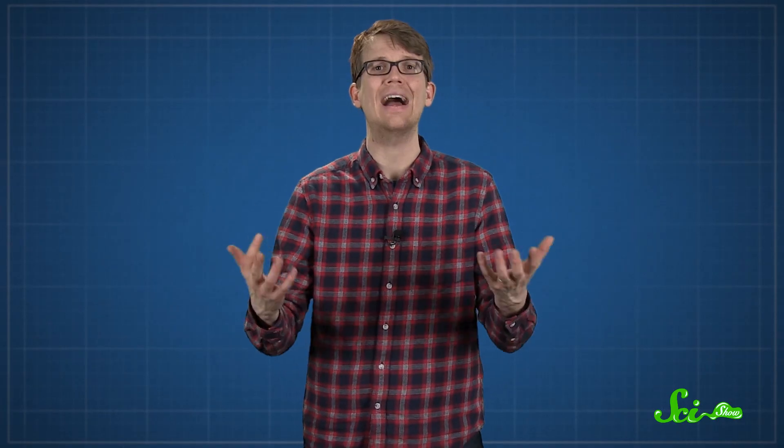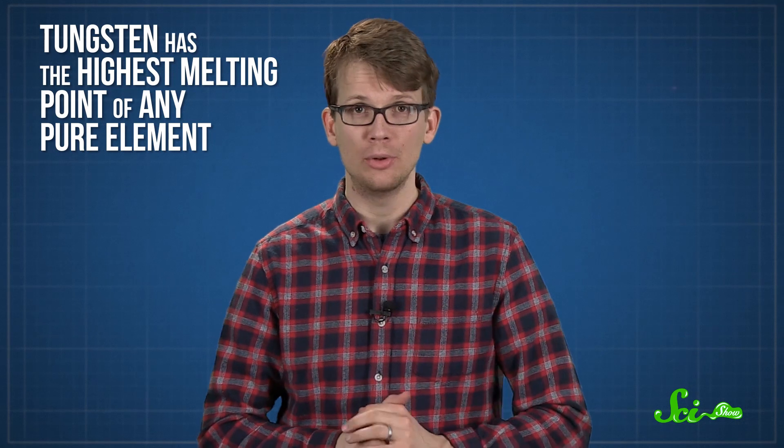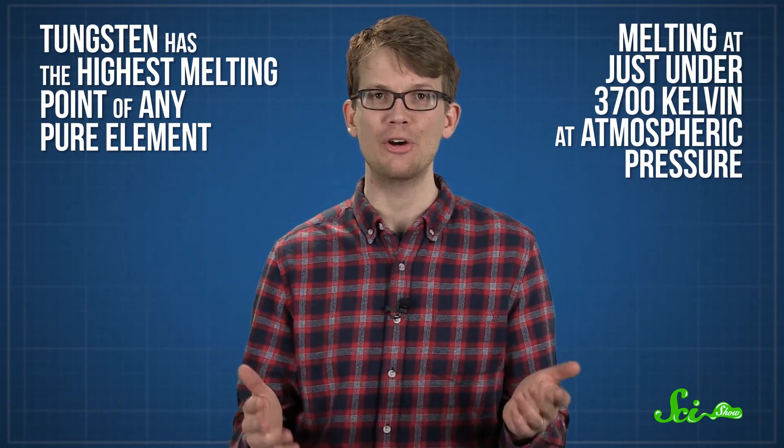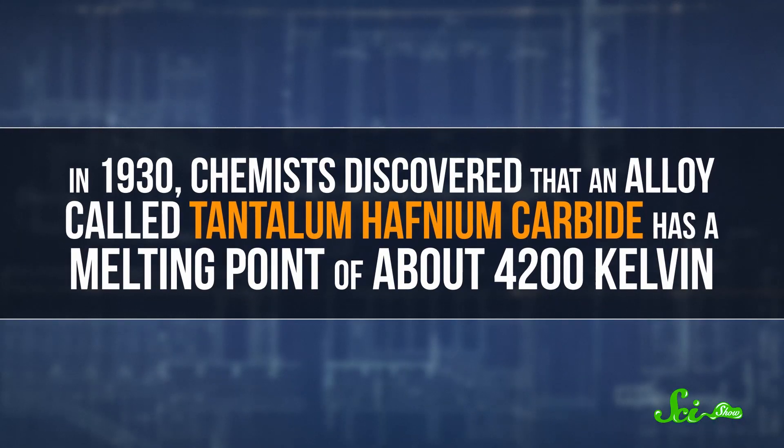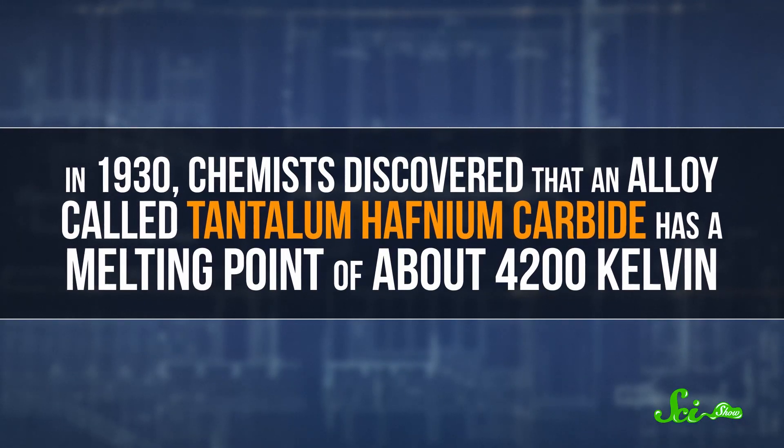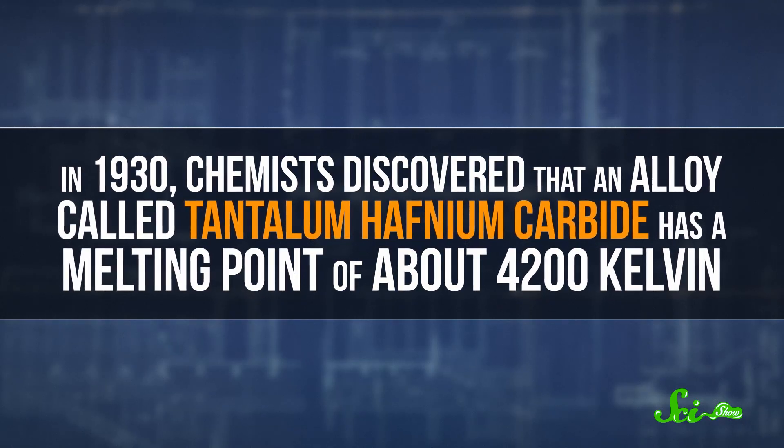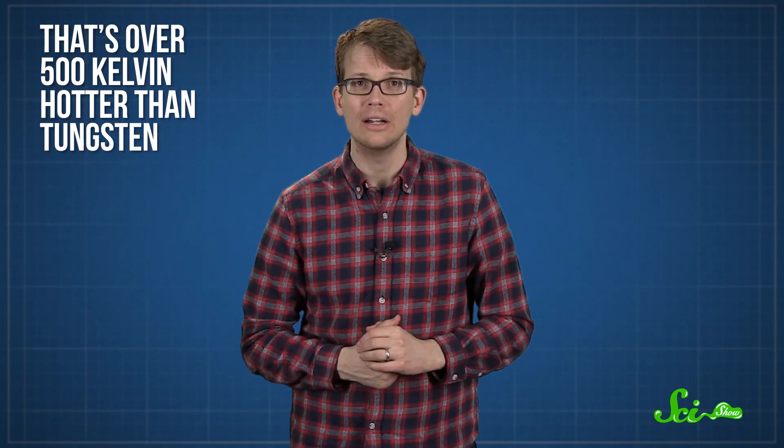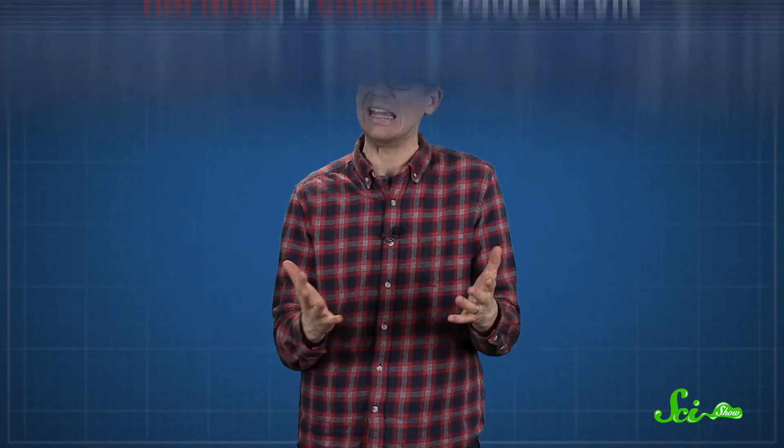But hot liquids and solids can be just as useful, which is why researchers are hunting for compounds with the highest melting and boiling points ever. We already know that tungsten has the highest melting point of any pure element, melting at just under 3,700 Kelvin at atmospheric pressure. But we found compounds that stay solid way above that. In 1930, chemists discovered that an alloy called tantalum hafnium carbide has a melting point of about 4,200 Kelvin. That's over 500 Kelvin hotter than tungsten, the hottest we know of, at least when it comes to compounds that we've actually made.